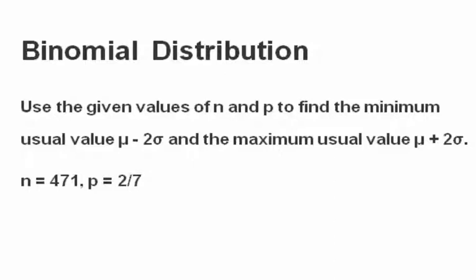Here we have a problem involving the binomial distribution. We're asked to use the given values of n, the sample size, and p, the constant probability, to find the minimum usual value, which is mu minus 2 times the standard deviation, and the maximum usual value, which is mu plus 2 standard deviations.